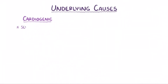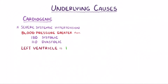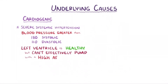Another cardiogenic cause is severe systemic hypertension, specifically a blood pressure that's greater than 180 systolic or 110 diastolic. In this situation the left ventricle is healthy, but simply can't effectively pump blood in a system with such a high afterload, in other words under conditions with such high systemic pressures.